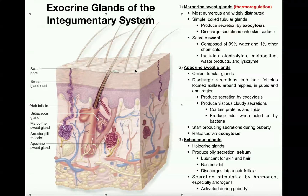For example, the surface of the skin could be a body surface onto which one of the types of exocrine glands secretes its secretion. We have three major types of exocrine glands. The first kind is called a merocrine sweat gland.